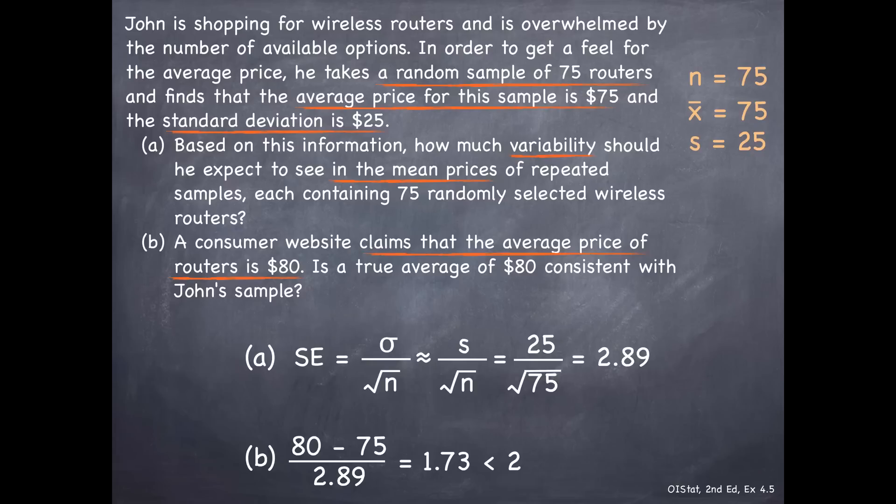Since this is less than 2, we can say that this is in fact consistent with John's average. This difference of $5 might simply be due to random sampling variability. I hope this has been useful for working with the central limit theorem and using that to make some decisions. Thank you.